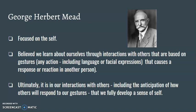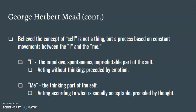Mead did not believe the concept of self to be a thing, but rather a process based on constant movements between the I and the me. The I represents the impulsive, spontaneous, unpredictable part of the self, where actions are driven by emotion and not much thought. And the me represents the thinking part of the self, where actions are driven by what is socially acceptable and thought through.